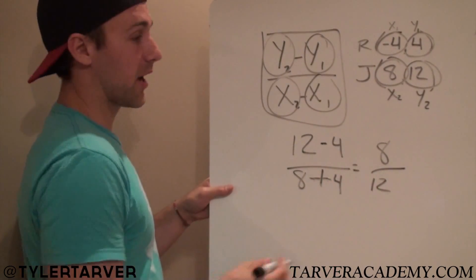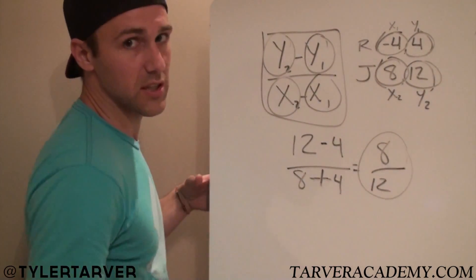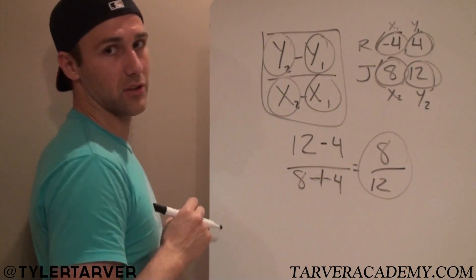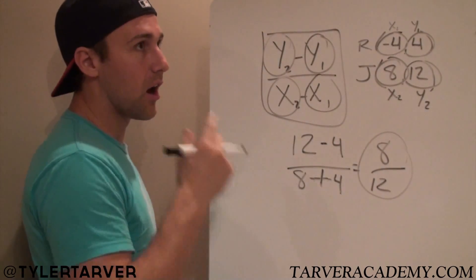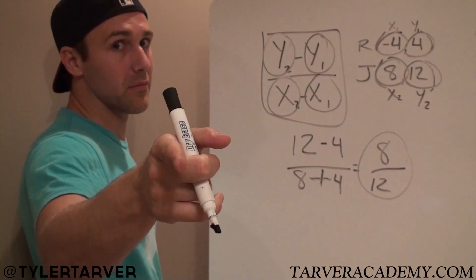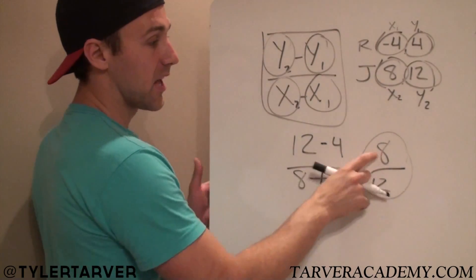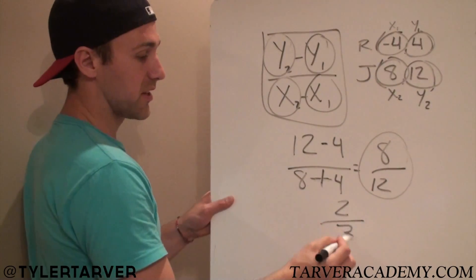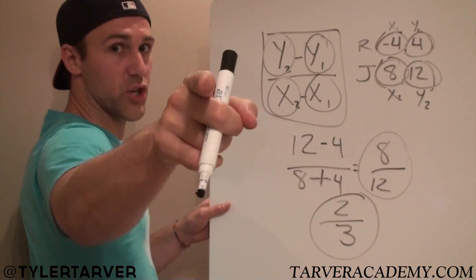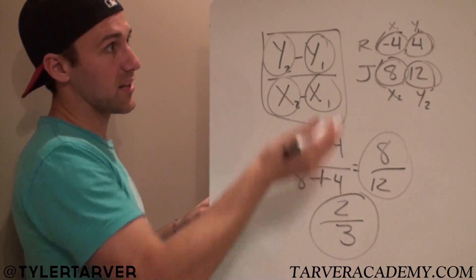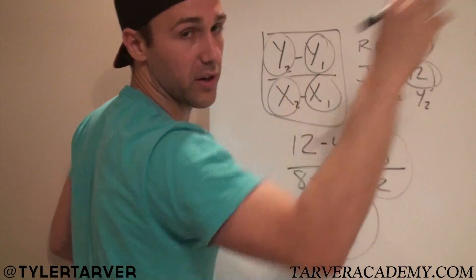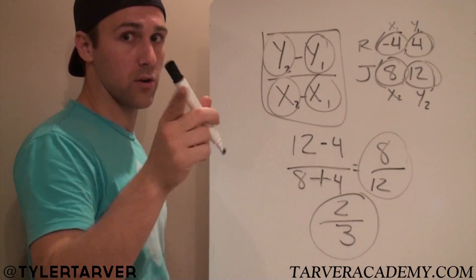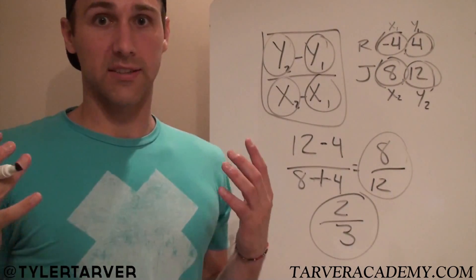But what else do we know? Reduce that mug. We know 2 goes into both of those because they're even, correct? Now what else do we know goes into those? They're small enough numbers to where we can use this. That's right, I heard you say it in your mind. You said 4. How many times does 4 go into 8? 2 times. How many times does 4 go into 12? 3 times. Our slope is 2 over 3. So we'd rise 2, run 3. Rise 2, run 3. And if you kept plotting those, you would plot your line. Cool, cool, cool. That's it. That's the slope formula.